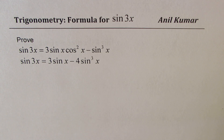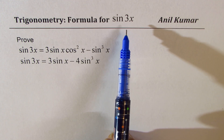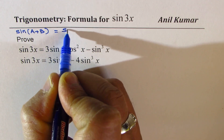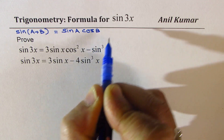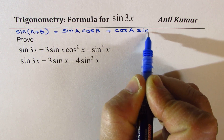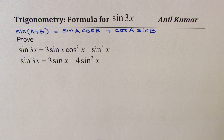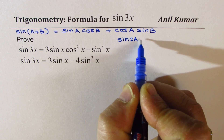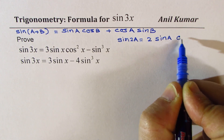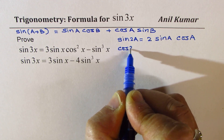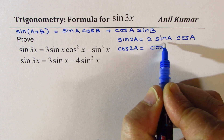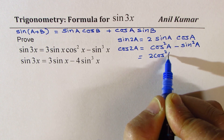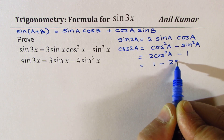We'll take up sine 3x. To find the formula for sine 3x, we'll begin with the compound angle formula. Sine A plus B can be written as sine A cos B plus cos A sine B. We have also derived the formula for double angles, which will be used here. Sine 2A can be written as 2 times sine A cos A, and cos 2A can be written as cos squared A minus sine squared A. We could also write this as 2 cos squared A minus 1, or even 1 minus 2 sine squared A.